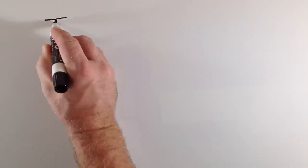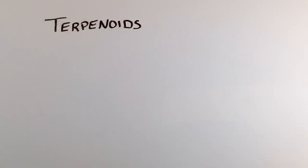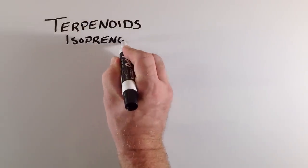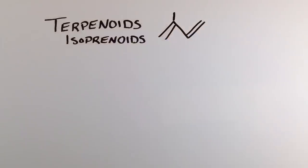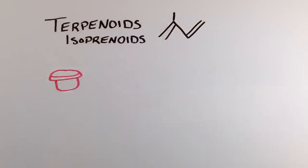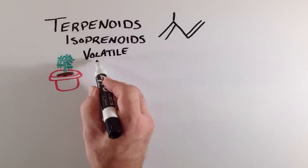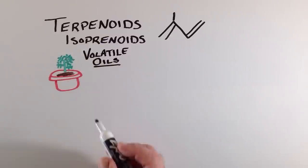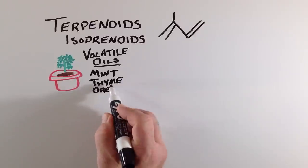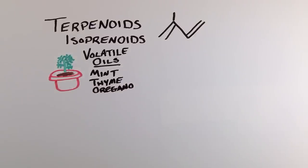Next are the terpenoids. This is an extremely diverse group of chemicals that are also known as isoprenoids because they are all derivatives of a 5 carbon isoprene unit. They can be modified into a number of different chemicals through addition of different side groups and other modifications. Excellent examples are the many volatile oils that are produced by plants in the mint family. These volatile oils give the characteristic scent and flavor to plants such as mint, thyme, and oregano.